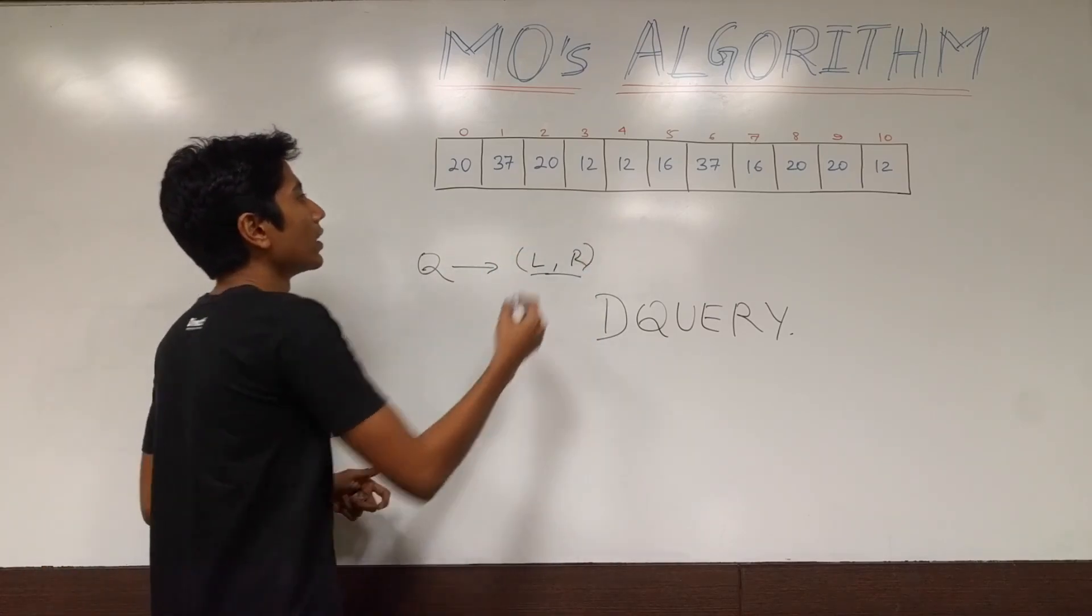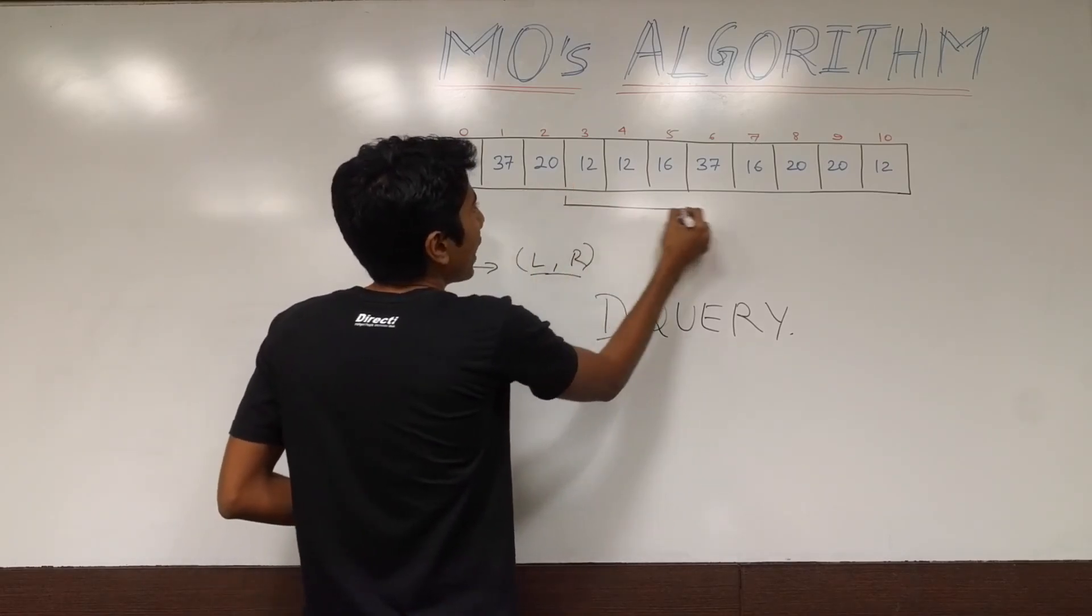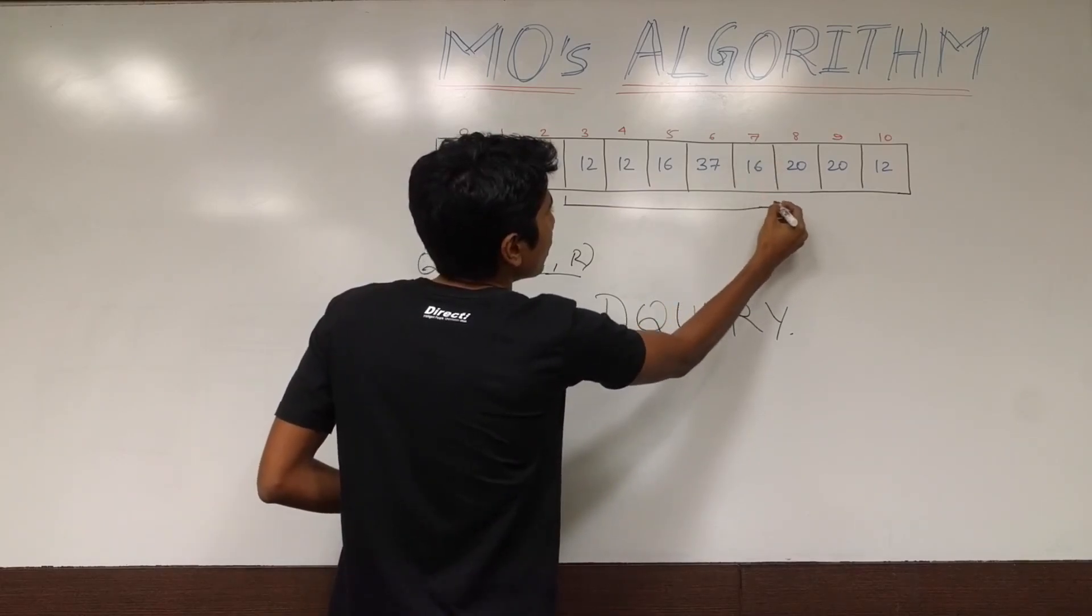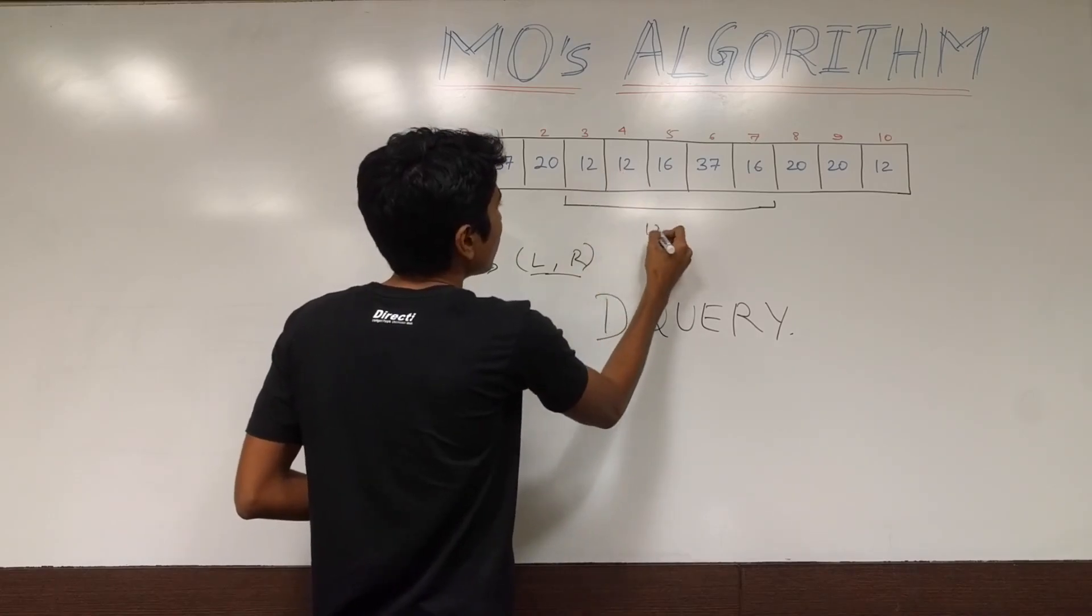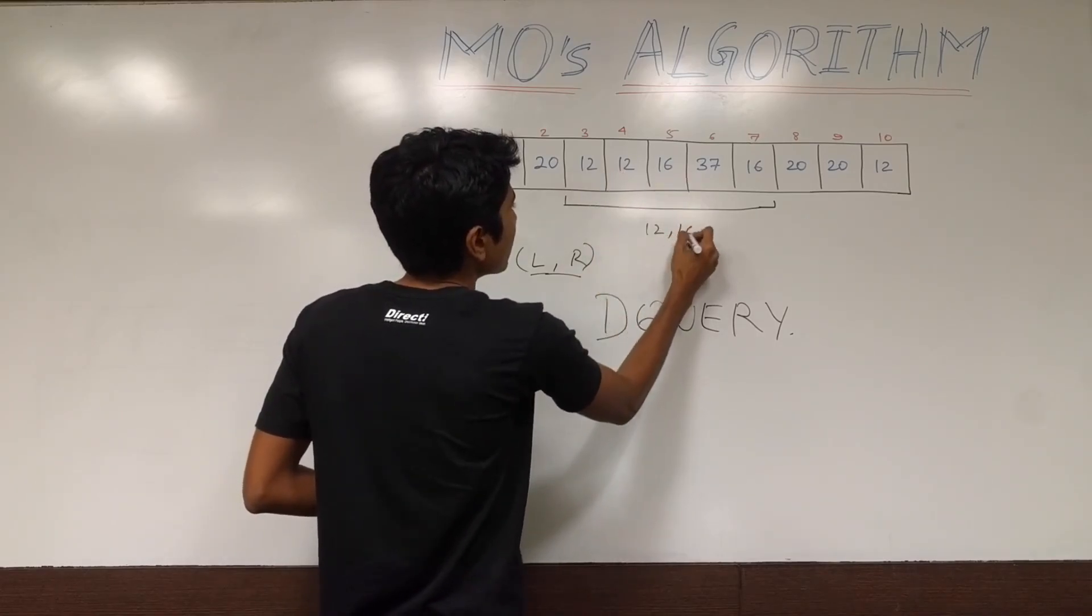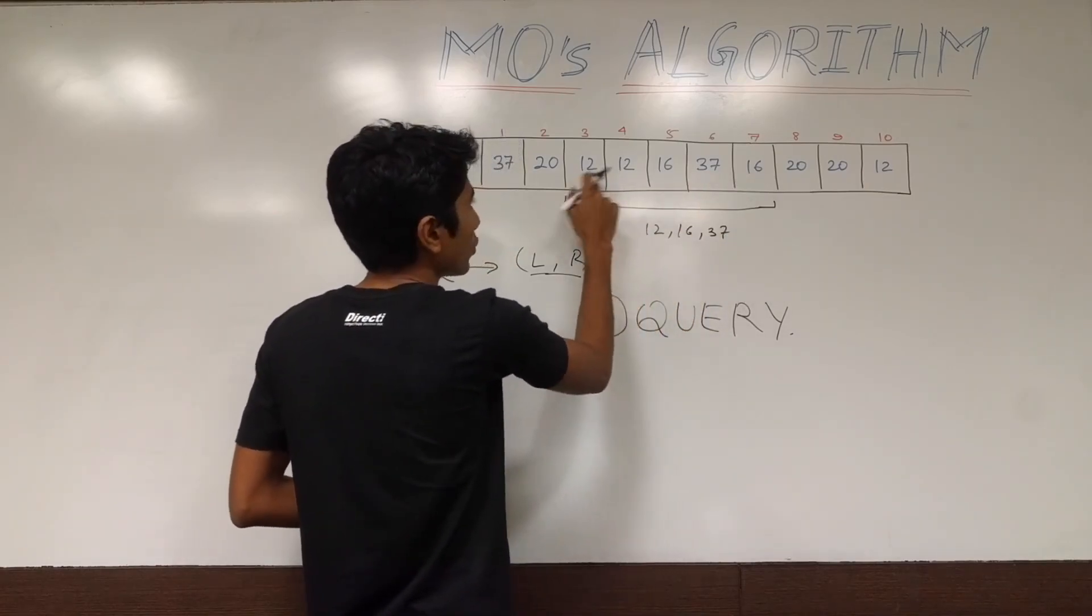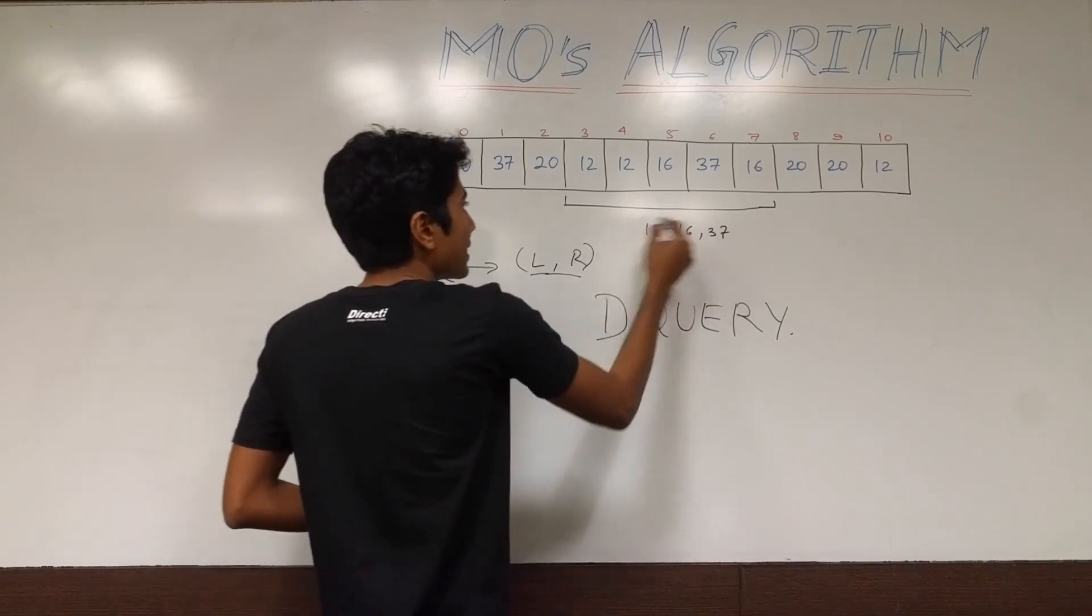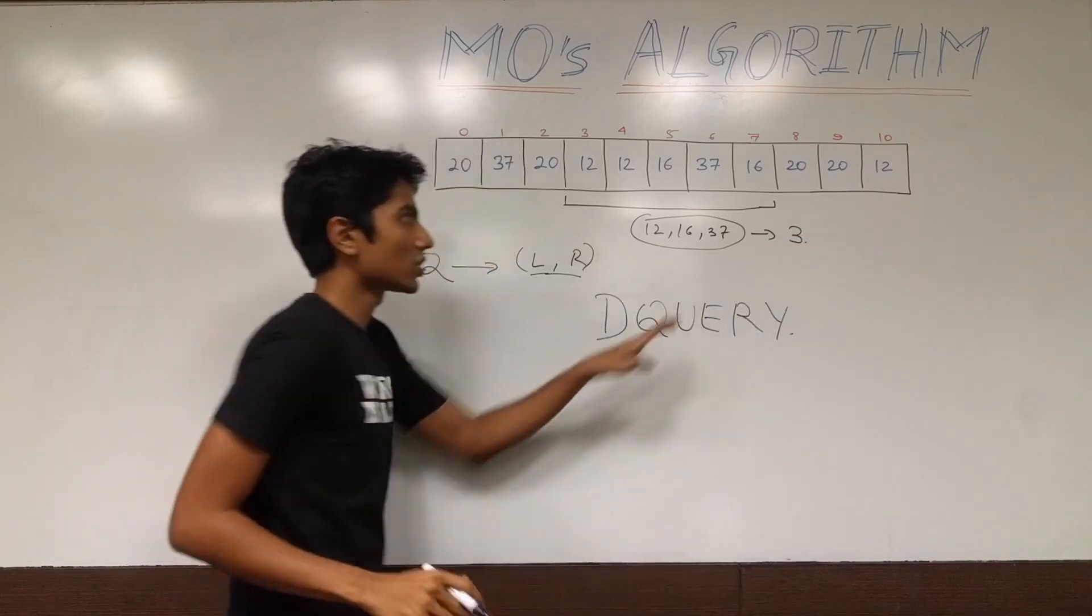Alright, so for example, if you take left as index 3 and right as index 7, so the number of distinct elements we have is 12, 16 is distinct, 37 and 16 is already there and 12 is just 1. So basically you have to create a set and you have to get the count on that set which is 3 in this case.